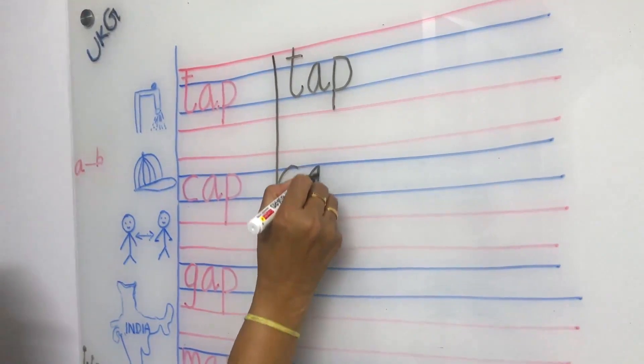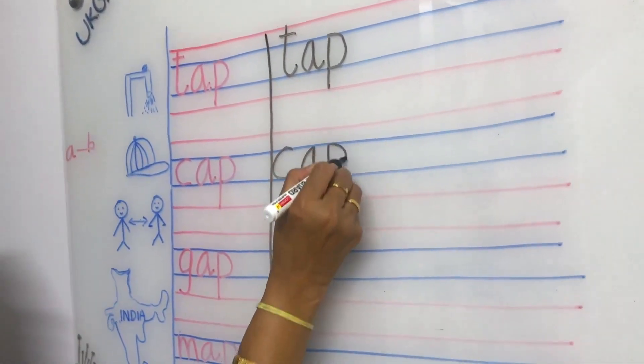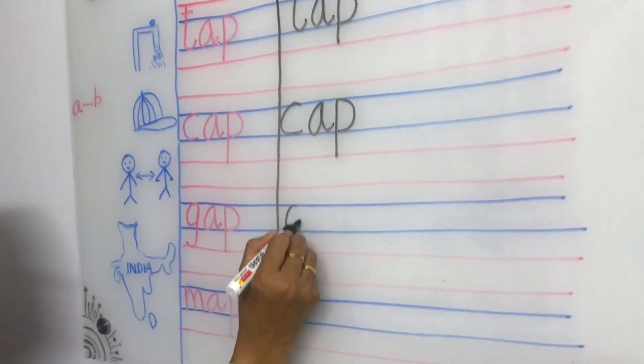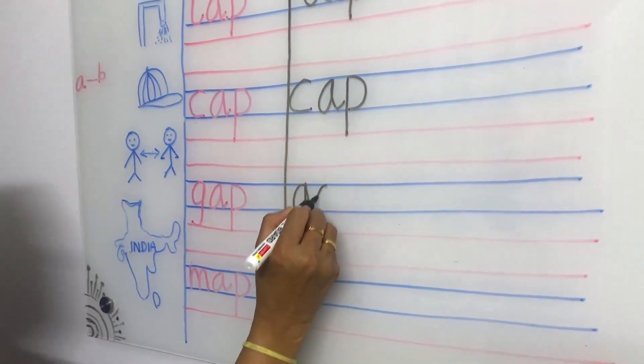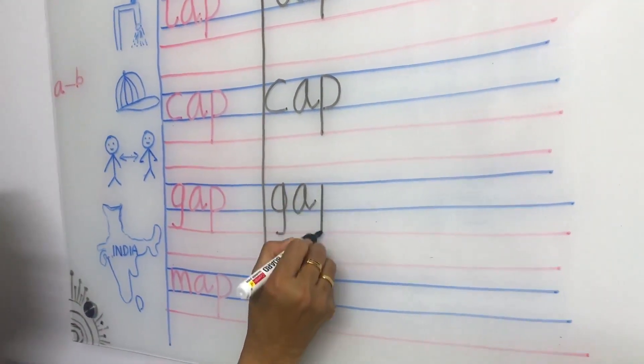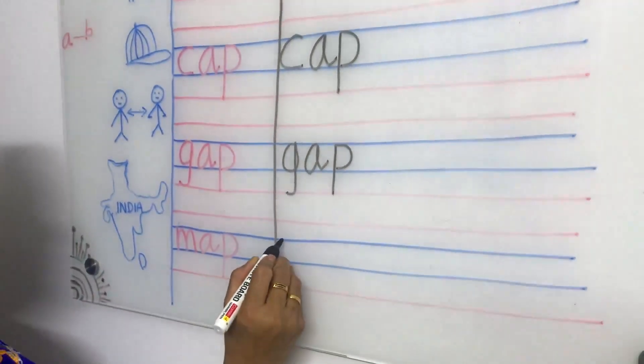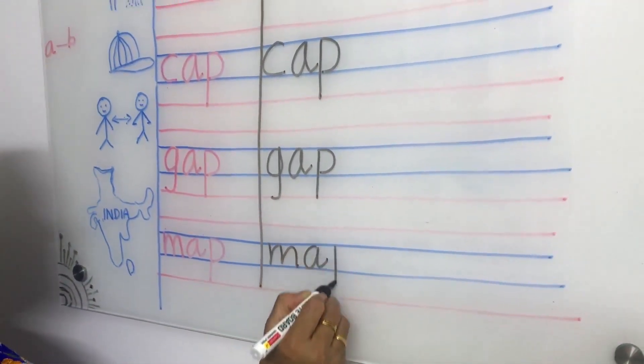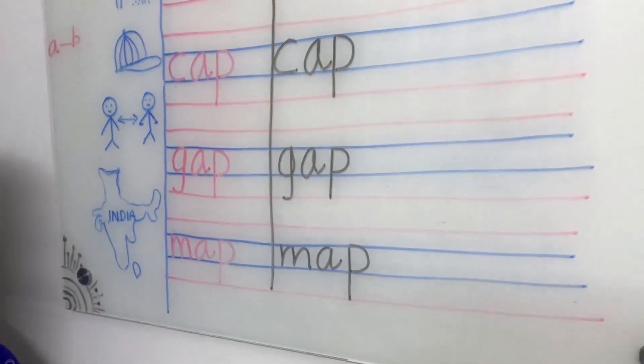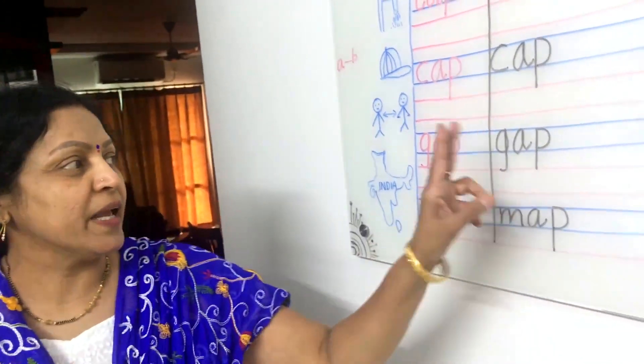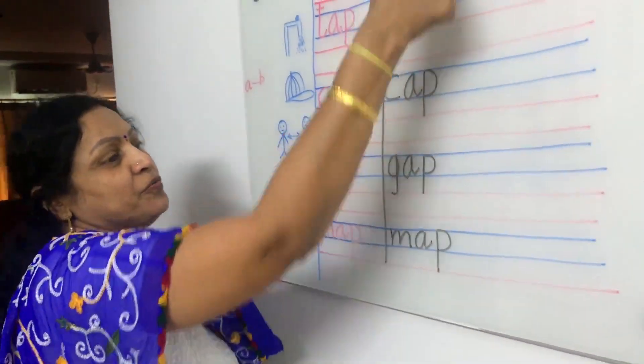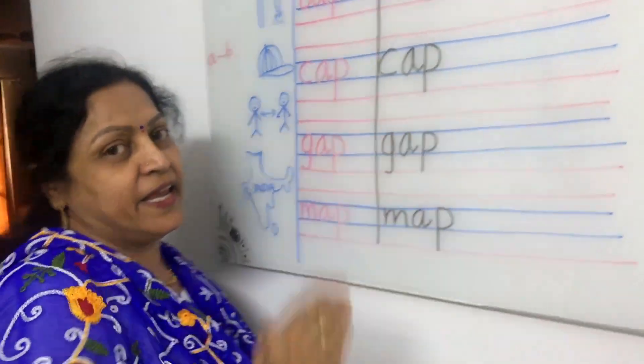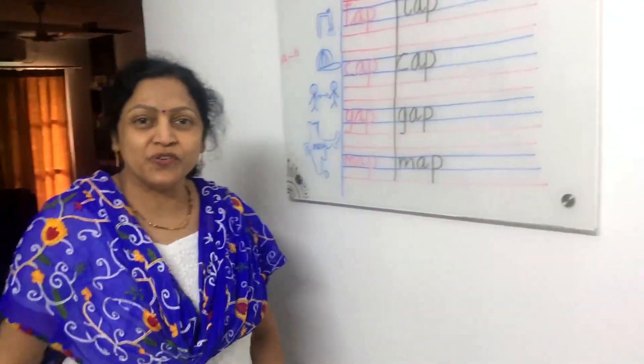C, A, P, cap. G, A, P, gap. M, A, P, map. Like this. You have to write three times. Here two times are there. You put one more line and write here also. So, how many times you should write? Three times.